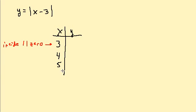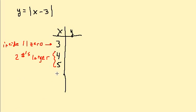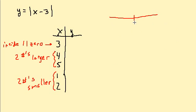Then I want to pick two numbers larger than 3, so I'll pick 4 and 5. And I want to pick two numbers smaller than 3, so I'll pick 1 and 2. On the number line, 3 is what makes inside the absolute value 0; I chose 4 and 5 as two numbers larger, and 1 and 2 as two numbers smaller.